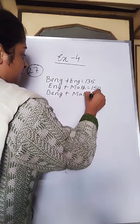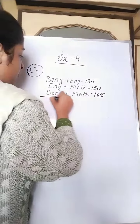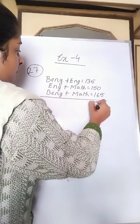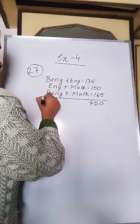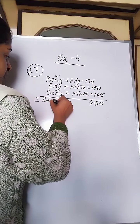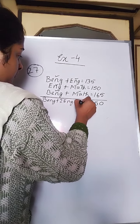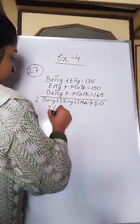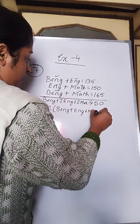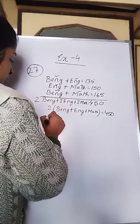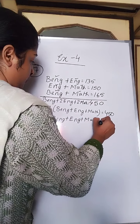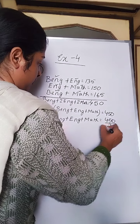If you add these three combinations, you get two Bengalis, two Englishes, and two Maths. So two Bengali plus two English plus two Math equals 450. Taking 2 as common, Bengali plus English plus Math equals 450 divided by 2, that is 225.